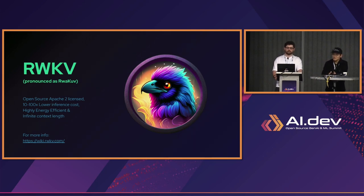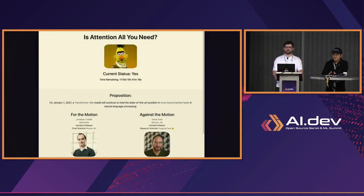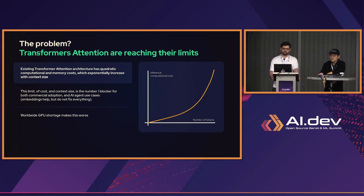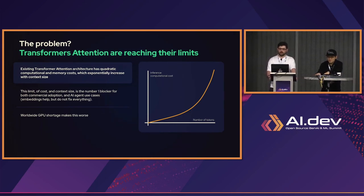So why linear transformers? Is attention all you need? A lot of people say yes, some people say no, and we're of the opinion that no, attention is not all you need. The problem is transformers have limits — the quadratic problem, the KV cache, and all that fun stuff. As you start generating more tokens, it takes more and more time, and cumulatively it reaches a point where it's just not feasible to generate more tokens. There's a lot of hard work going into alleviating these problems, and ours is one of the solutions.